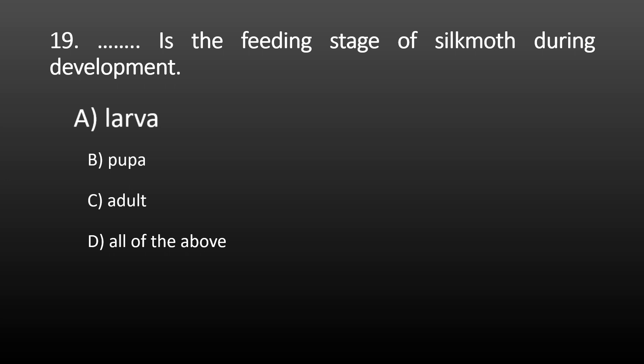Next MCQ: silk moth development is ametabolous, hemimetabolous, polymetabolous, or holometabolous? Ametabolous means there is no metamorphosis. Hemimetabolous insects like the red cotton bug have only 3 developmental stages: egg, nymph, and adult. Holometabolous insects have all 4 developmental stages: egg, larvae, pupae, and adult. Hypermetabolous means multiple larval developmental stages are present. Since silk moth development passes through egg, larvae, pupae, and adult, the correct option is holometabolous.